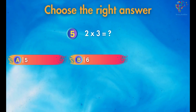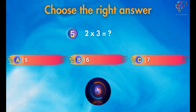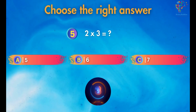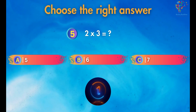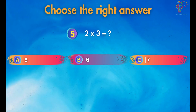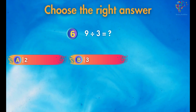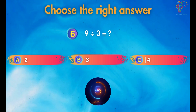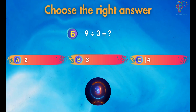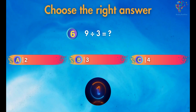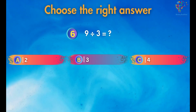2 times 3 is equal to 6. 9 divided by 3 equals 3.